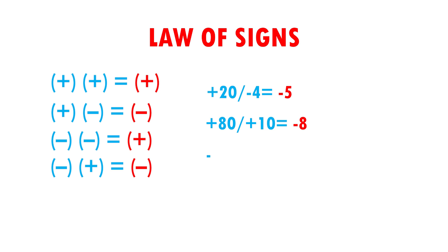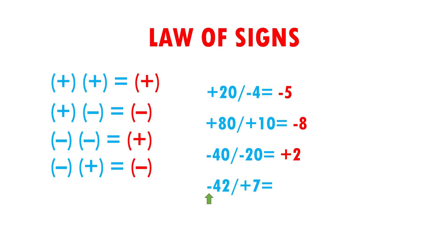Now, minus 40 divided by minus 20. Negative divided by negative gives me positive, and 40 divided by 20 gives me 2. My result is plus 2. Now I have minus 42 divided by plus 7. Negative divided by positive gives me negative, and 42 divided by 7 gives me 6. My result is minus 6.